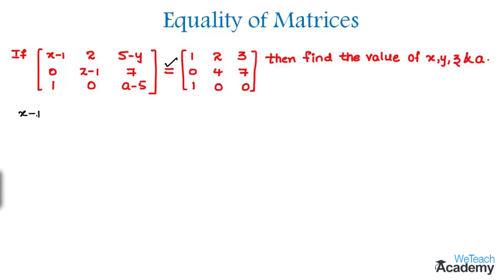So here we get x minus 1 is equal to its corresponding element which is 1. And then in order to find the value of y, we need to equate 5 minus y which is equal to 3. And then in order to find the value of z, let us equate it. So we get z minus 1 which is equal to 4. And at last a minus 5 is equal to 0.